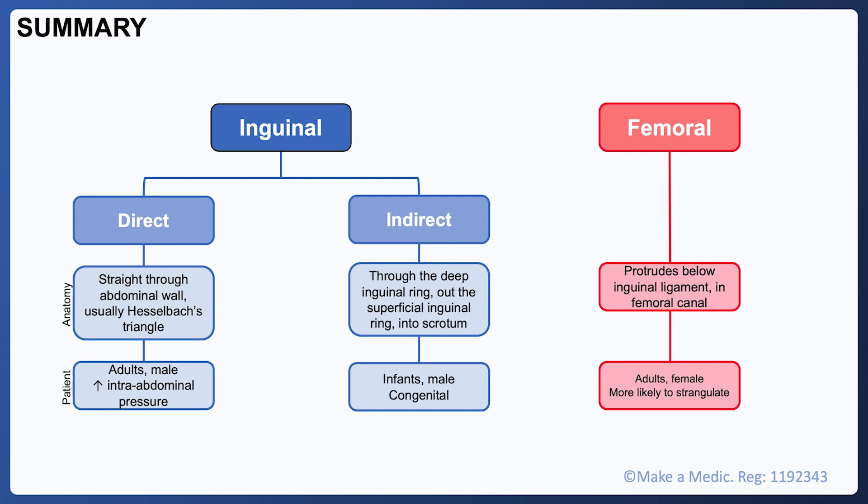The processus vaginalis is an outpouching of peritoneum that allows the testicles to descend into the scrotum and should obliterate before birth. However, in some individuals it will remain patent, providing a route through which the bowels can protrude into the inguinal canal. Femoral hernias are much more rare than inguinal hernias but are relatively more common in women, and they are associated with an increased risk of incarceration and strangulation.